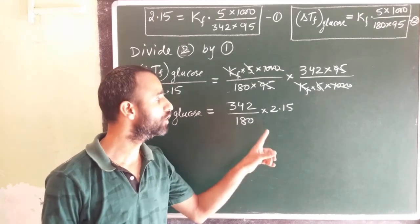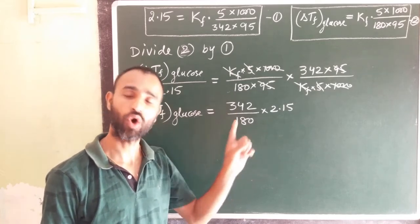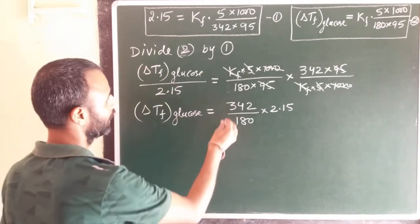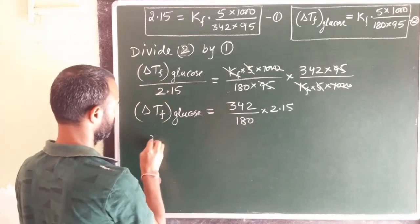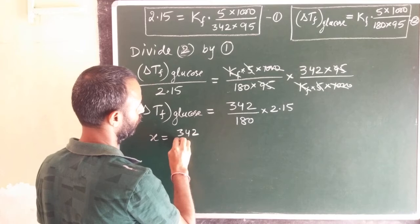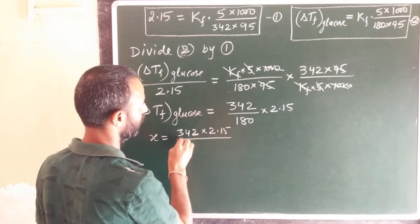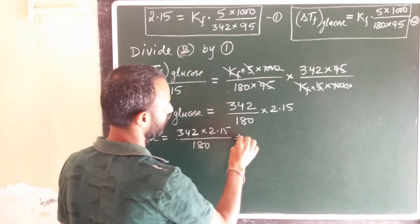But if you would like to calculate by using log table, then take it as x. x equal to 342 into 2.15 over 180.